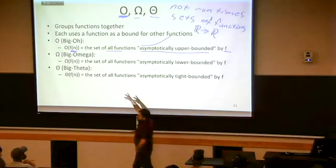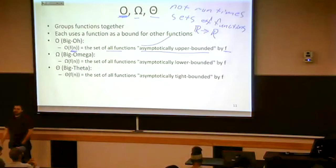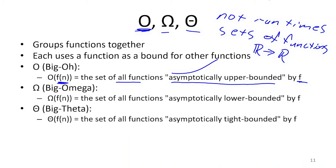So given a function, when we ask big O of that function, we get as a result some set of functions, which are those that are eventually overtaken by F.